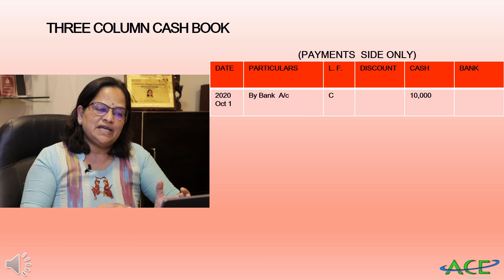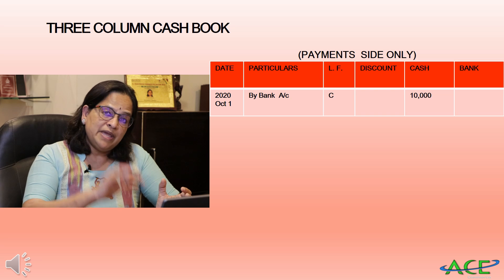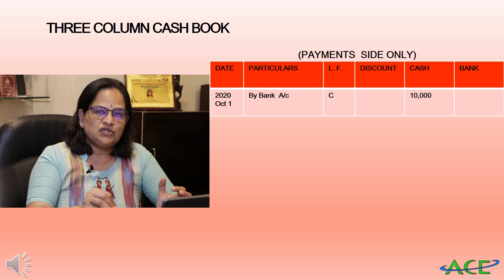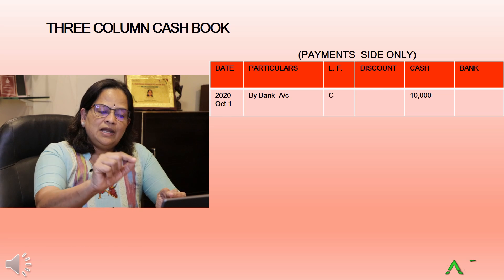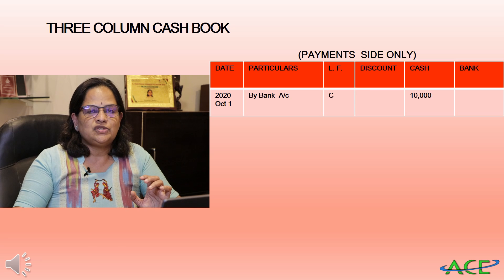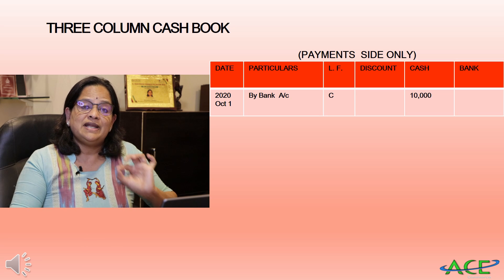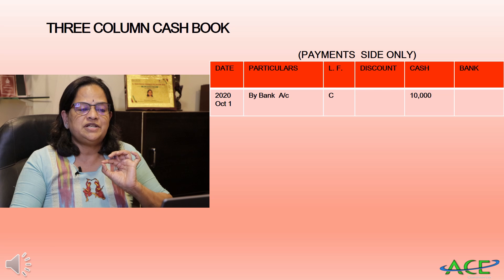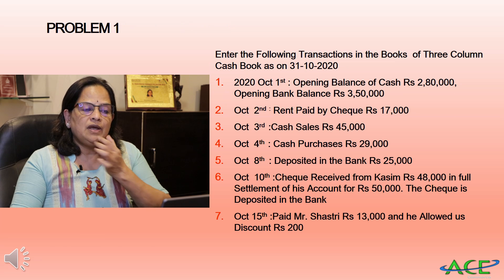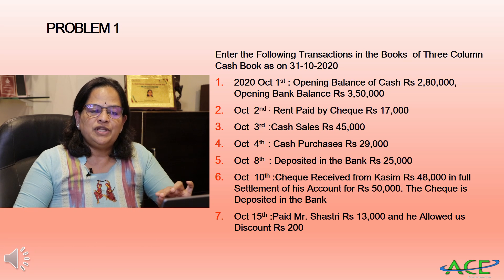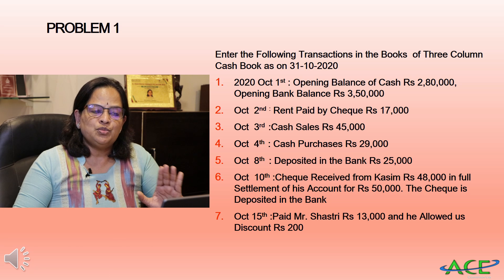On the payment side, 'By Bank' goes in the cash column — we write 10,000. In the ledger folio column we write capital 'C' for contra entry. Now let us do one problem: enter the following transactions in the three column cash book as on 31/10/2020.